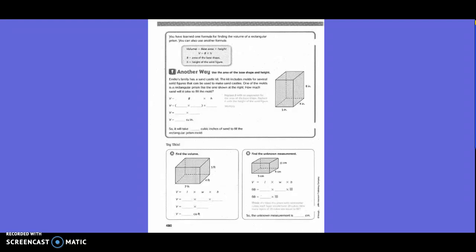If you have learned one formula for finding the volume of a rectangular prism, you can also use another formula. They also say the volume equals the base area times height, or V equals B times H. So basically they have just combined the base or the bottom part times all the layers.